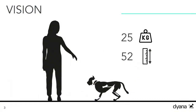Existierende Roboter vermitteln mit ihrem technischen und funktionalem Aussehen selten Sympathie. Deswegen legen wir einen besonderen Wert auf ein ästhetisches und vor allem freundlich anmutendes Erscheinungsbild. Diana soll sich nicht nur in unterschiedlichen Gangarten im Schritttempo fortbewegen können, sondern auch ihre Körpersprache nutzen, um im Betrachter Zuneigung zu erwecken. Für die Größe und den Aufbau von Diana haben wir uns an der echten Tierwelt orientiert. Die Proportionen des Körpers basieren auf der Anatomie eines Luchses.